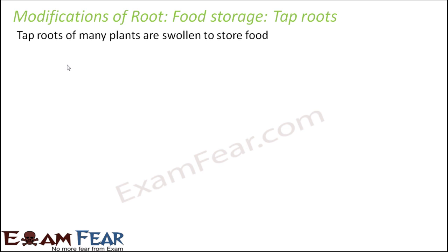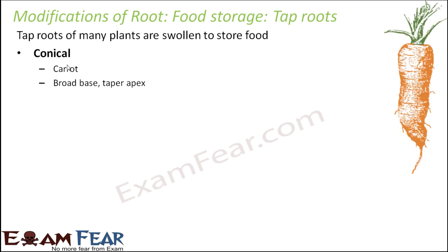Tap roots of many plants are swollen to store food. We saw that potatoes are swollen stems used to store food, and ginger is also a swollen stem used to store food. Similarly, roots of certain plants are also swollen to store food. For example, carrot is not a stem — carrot is basically the root.